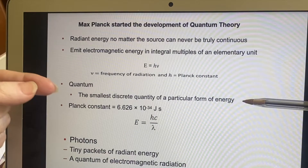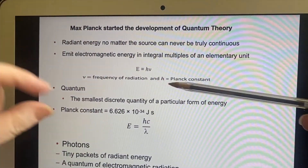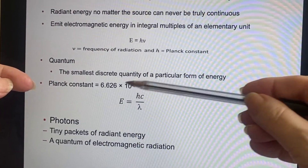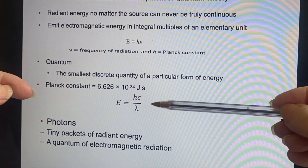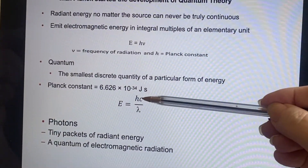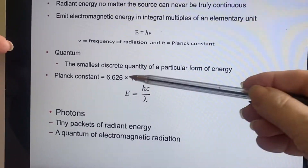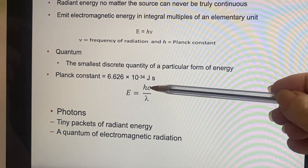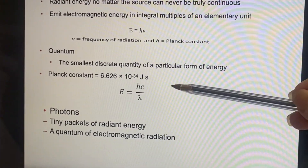A quantum is the smallest discrete quantity of a particular form of energy — discrete as opposed to continuous, a little stepping stone. Planck's constant, again, is 10 to the negative 34 — tiny, tiny, tiny. Now, if you combine the two equations we had before — lambda times nu equals C, and E equals h-nu — you can come up with an equation showing that energy can also be related to Planck's constant, the speed of light, and the wavelength. You can derive this equation from the other two — that's an important point.